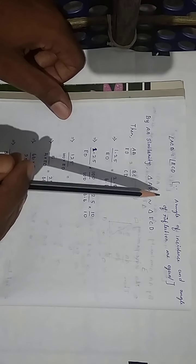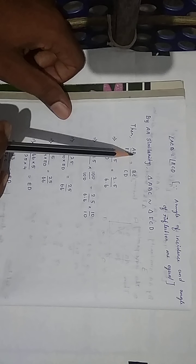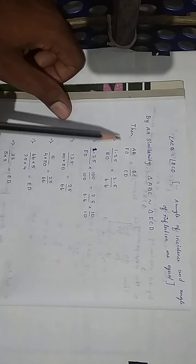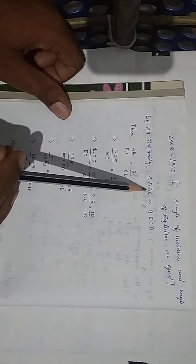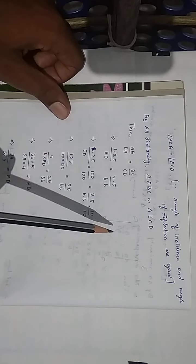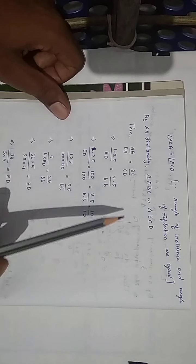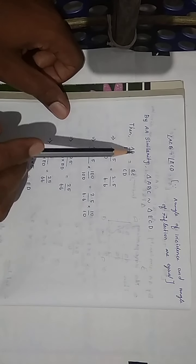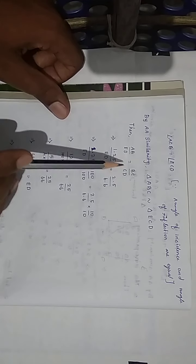Therefore, the corresponding sides are proportional. So AB divided by ED is equal to BC divided by CD.